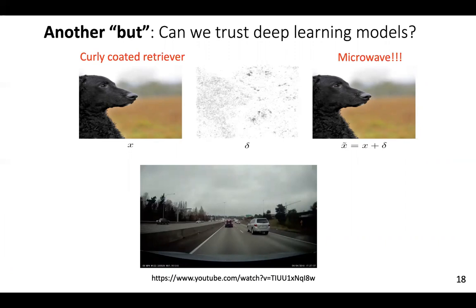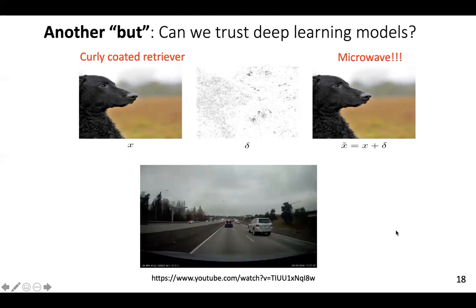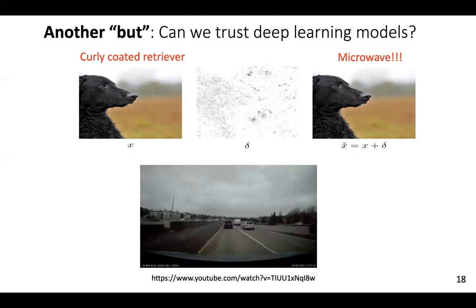The second part of my talk is another serious but: can we trust deep learning models? You might have seen examples of adversarial attacks. Here is one image of a retriever, and then basically a perturbation delta — barely perceivable by humans — is added, and the classifier gives a totally different prediction: a microwave. These are adversarial examples. This is not just a matter of toy examples; it also happens in real life with serious consequences. For example, a famous YouTube example where an autonomous vehicle was about to go into an intersection and the human operator had to intervene at the last moment.